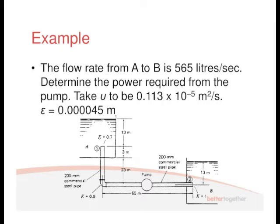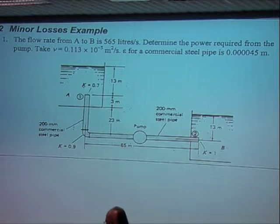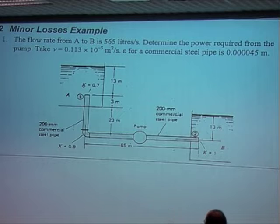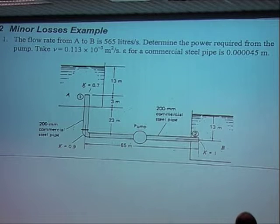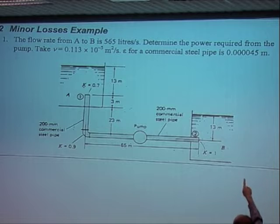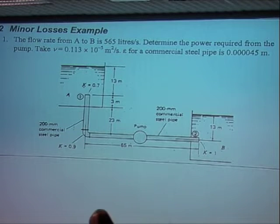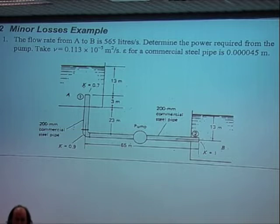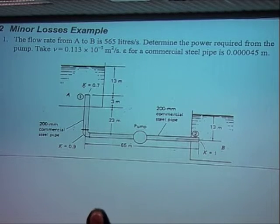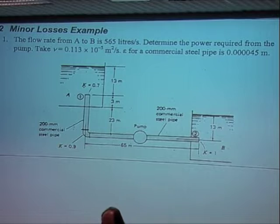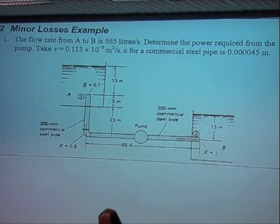So we've got a reservoir A, a reservoir B, and we've got a pipe going between them, and we've got a pump in there as well. We know the diameter, that's 200 millimetres. We've got our epsilon value, and we've got to determine the power required. We all know that power is the pressure drop times by the flow rate, and so the point of this exercise is to work out what the power required is.